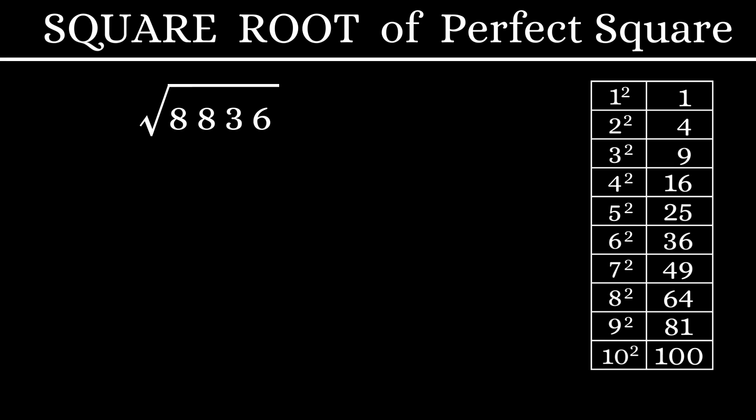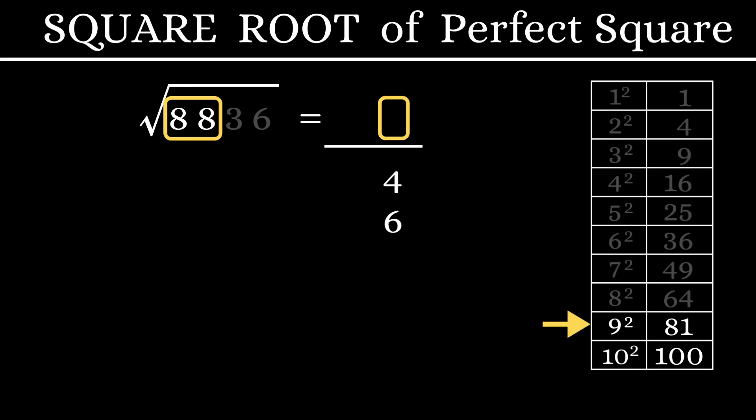Next example, 8,836. The units digit is 6, which means we can have either 4 or 6 in the units place of our answer. Next, let's cut out the last 2 digits 36 and consider 88. 88 falls between 81 and 100, which is between 9 squared and 10 squared. Let's consider the smaller number 9. Our answer could be 94 or 96.